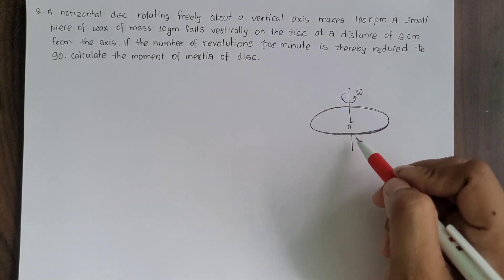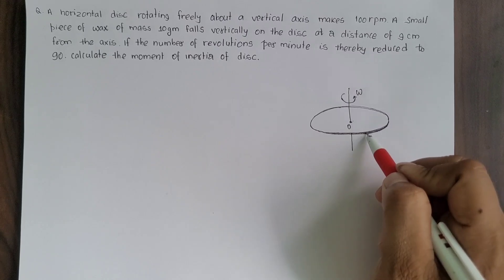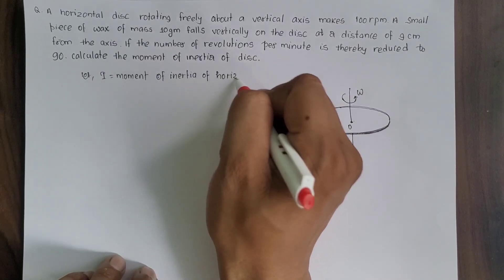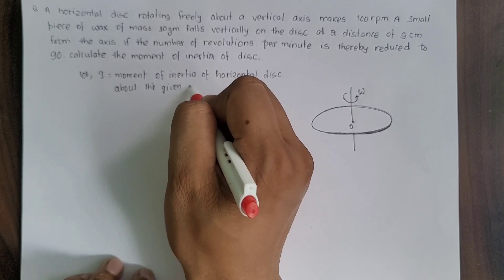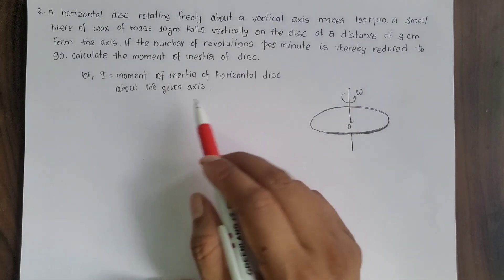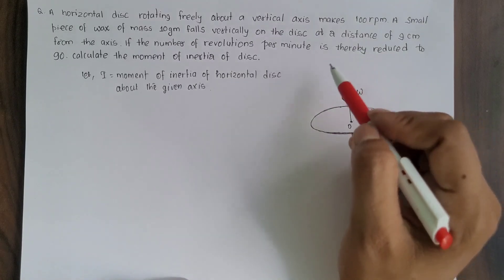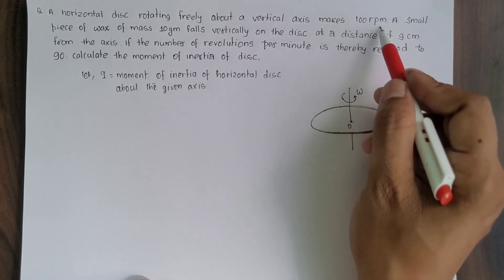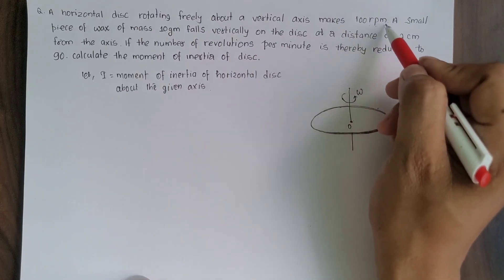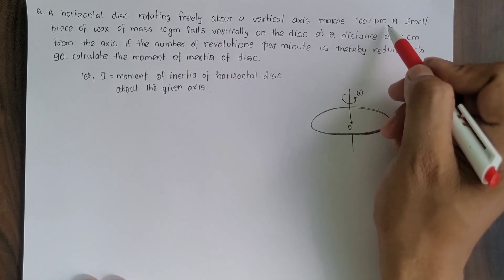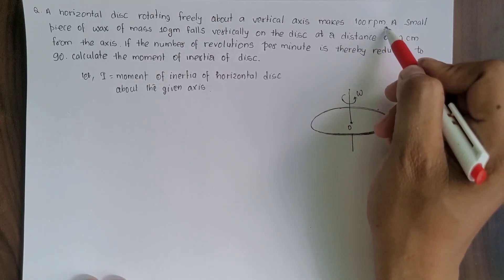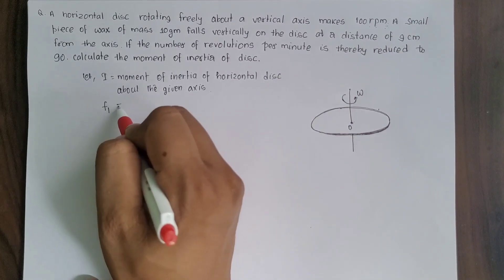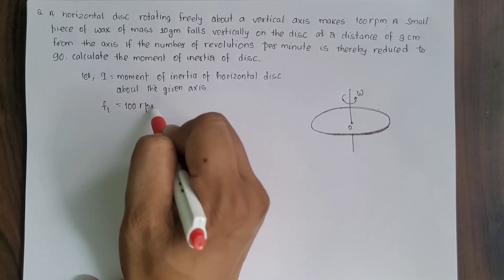Horizontal disc. Let us suppose the moment of inertia of this horizontal disc about the given axis is I. Before putting the wax on the horizontal disc, initial frequency of the disc was 100 revolutions per minute. Initial frequency of the rotating disc F1 is 100 rpm, revolutions per minute.